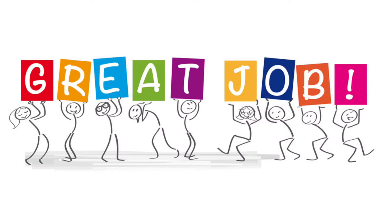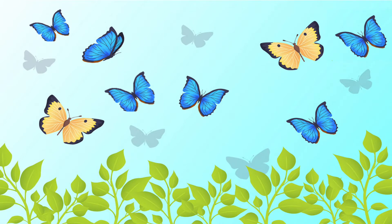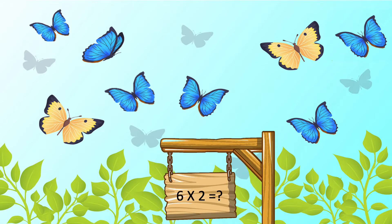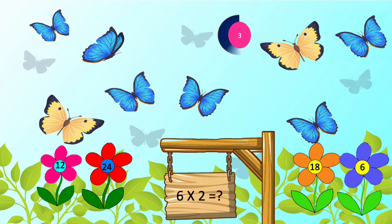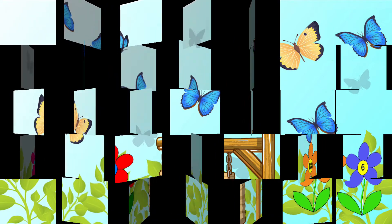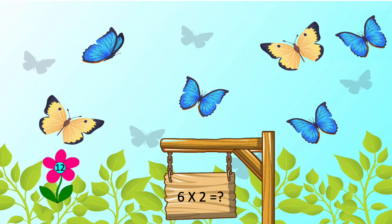Great job guys! Do you like butterflies? I also like butterflies. Let's see a question on that. There are 6 blue butterflies and 2 yellow butterflies. I will ask you one multiplication on that. The question is 6 into 2 equals dash. The options are 12, 24, 18 and 6. Your time starts now. Time is up. The correct answer is 12. Awesome job!